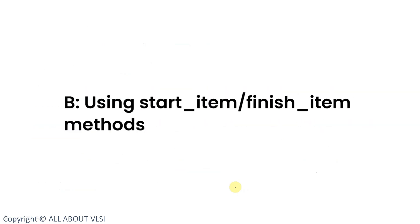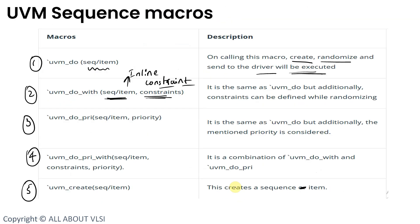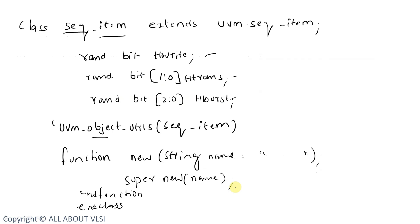One more question arises: the sequence is a standalone class not involved in the testbench hierarchy, whereas the sequencer is a component involved in the testbench hierarchy. How does the sequence know where the sequencer is located in the testbench hierarchy? We will discuss this in the next session — how the sequence knows where the sequencer is located and how it sends data items to the sequencer.